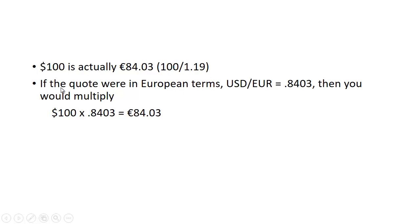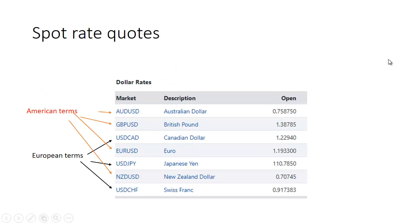However, if the quote happened to be in European terms — 0.8403 euros to buy one U.S. dollar — then you would multiply. When converting from one currency to another, you either multiply or divide, so you have to know which one to do.